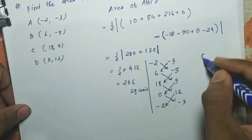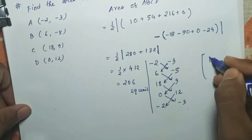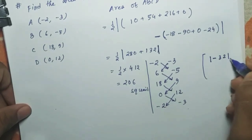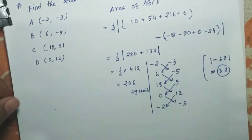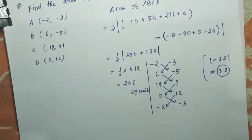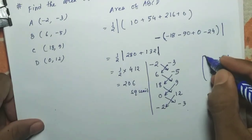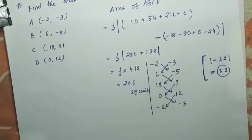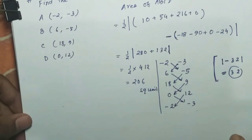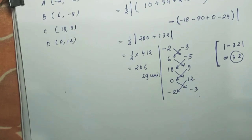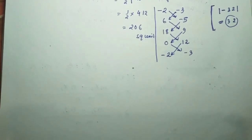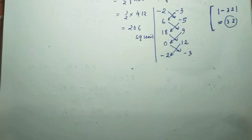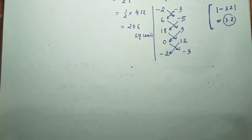Regarding the role of the modulus sign: if inside the modulus we get a negative number like −32, it automatically becomes 32, because the answer of any modulus is always a positive number. The problems on area of a triangle end here. In the next class I will discuss the section formula. Thank you.